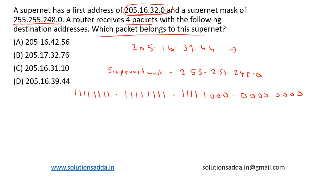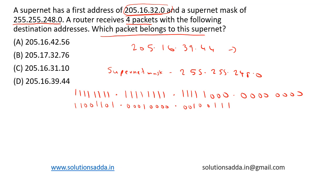Now for option D, that is 205.16.39.44. In binary: 205 is 11001101; 16 is 00010000; 39 is 00100111; and 44 is 00101100. Let's now perform the AND operation with this.